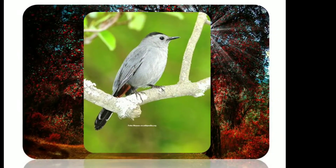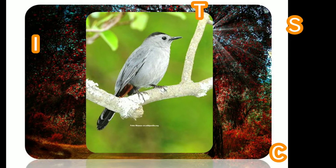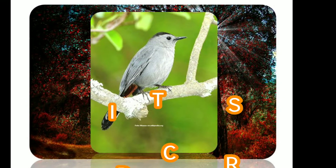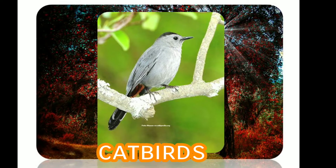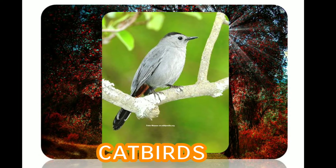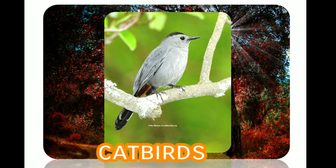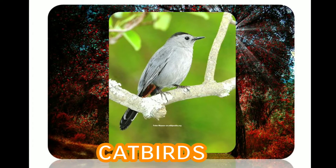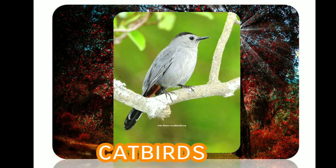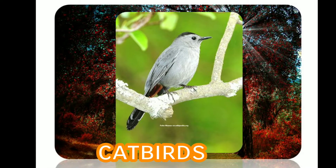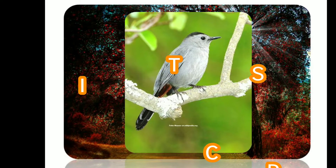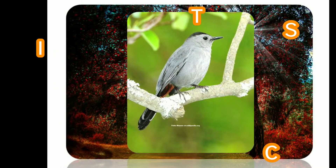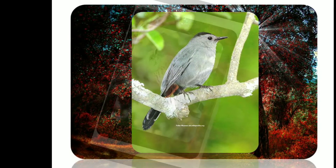Catbirds usually build nests on horizontal branches hidden at the center of dense shrubs, small trees, or in vines including dogwood, hawthorn, cherry, rose, elderberry, grape, honeysuckle, and blackberry. Nests are typically around four feet off the ground. Average longevity in the wild is about two to five years.